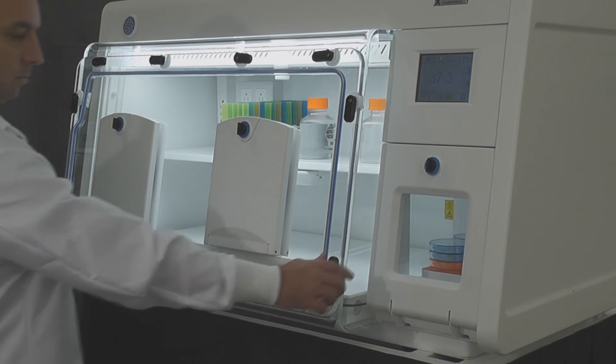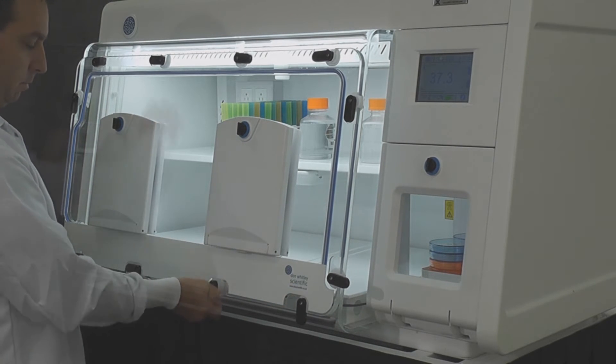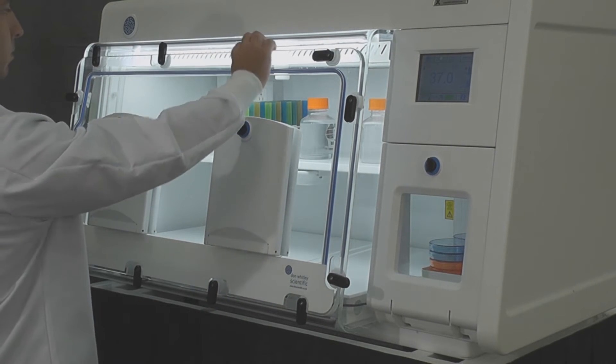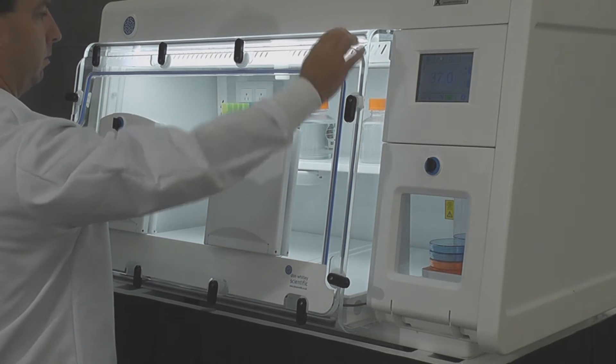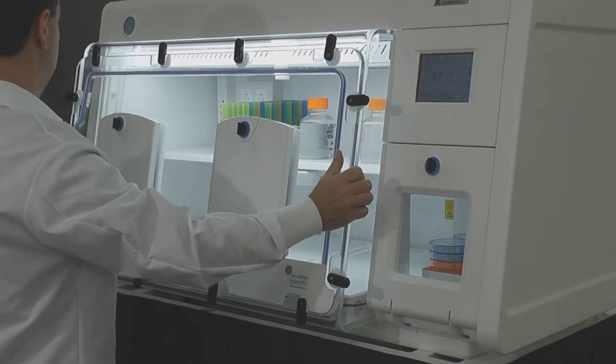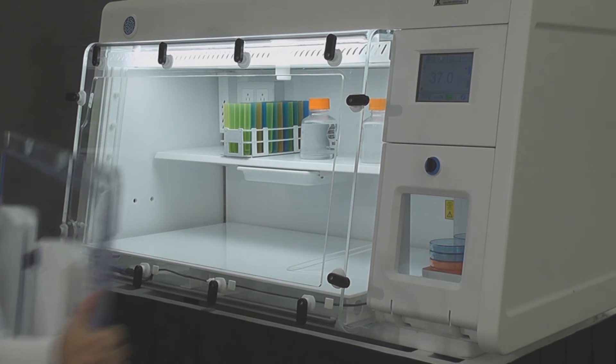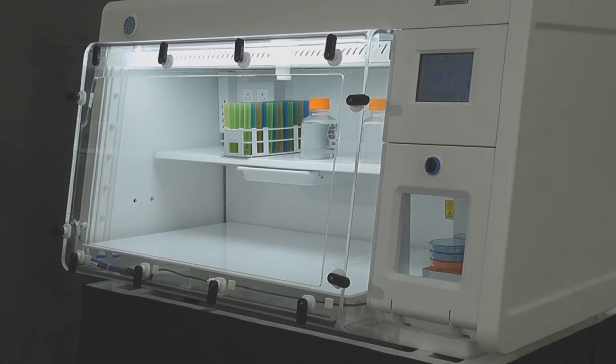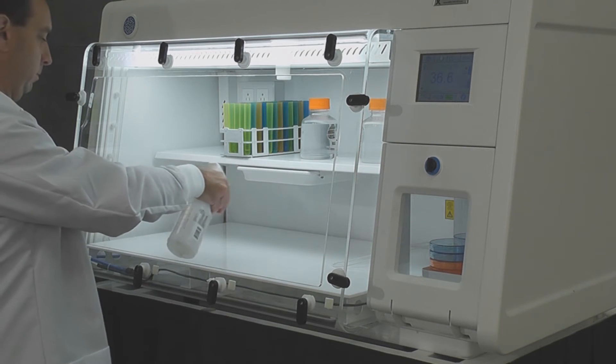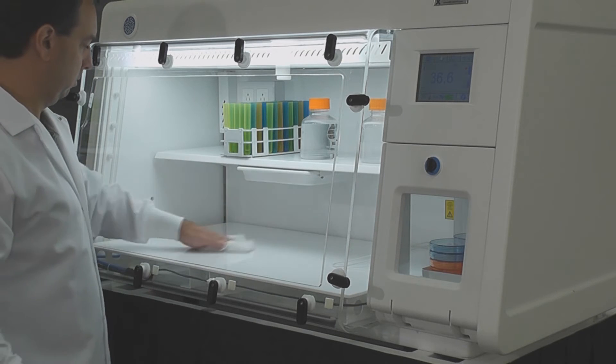The A35 is available with an optional removable front. Simply release the latches surrounding the perimeter of the front shell and using both hands lift the front away from the cabinet. This feature facilitates easy decontamination between experiments and the introduction and removal of large pieces of instrumentation.